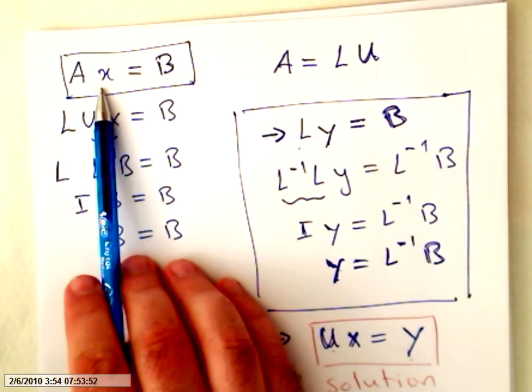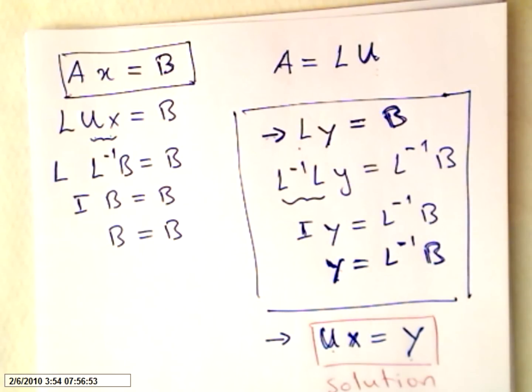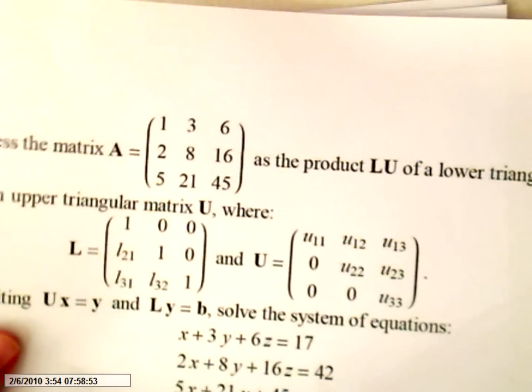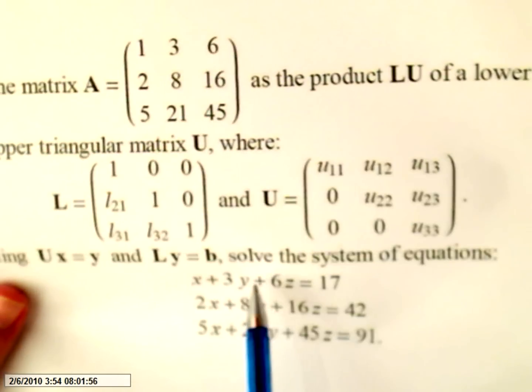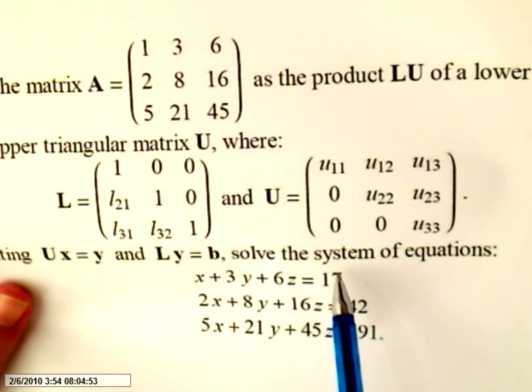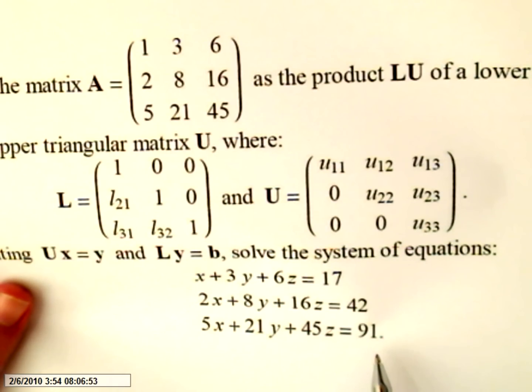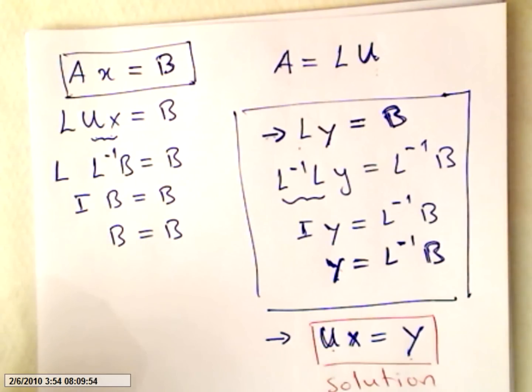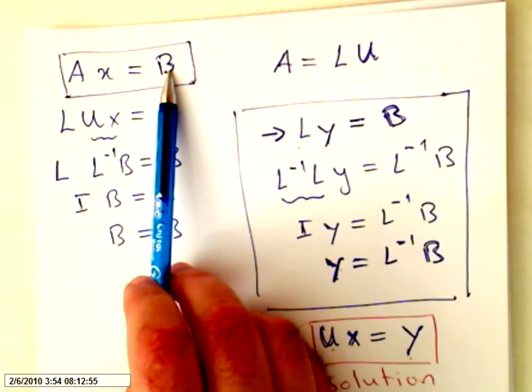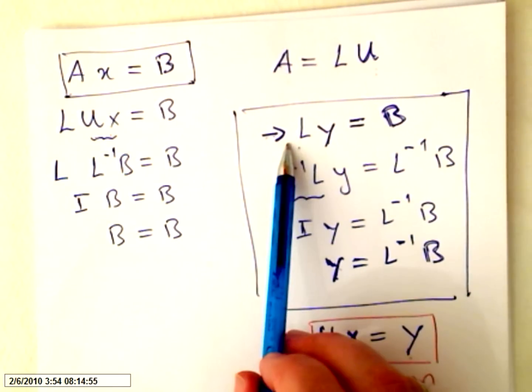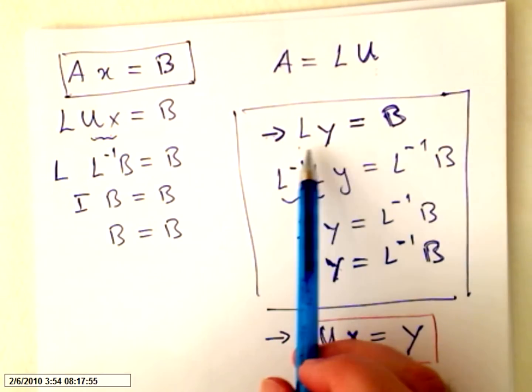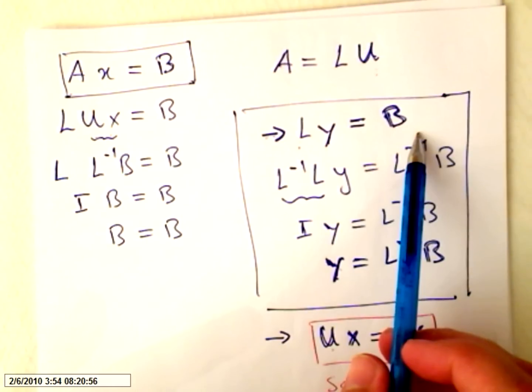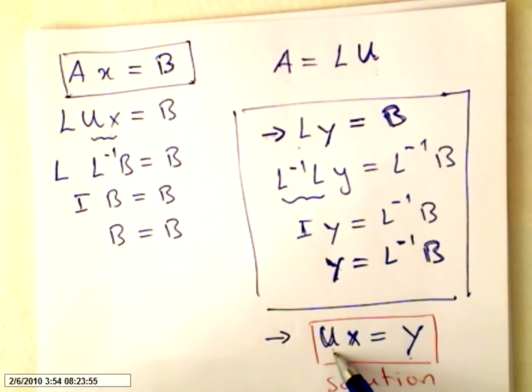If you have this AX equals B, the problem that was given to us today, that's what you have here. You have A times the variables, AX equals B. So you do AX equals B. First step, lower times Y, new variables, equals B. And then, upper matrix X equals Y, and you will have the solution.